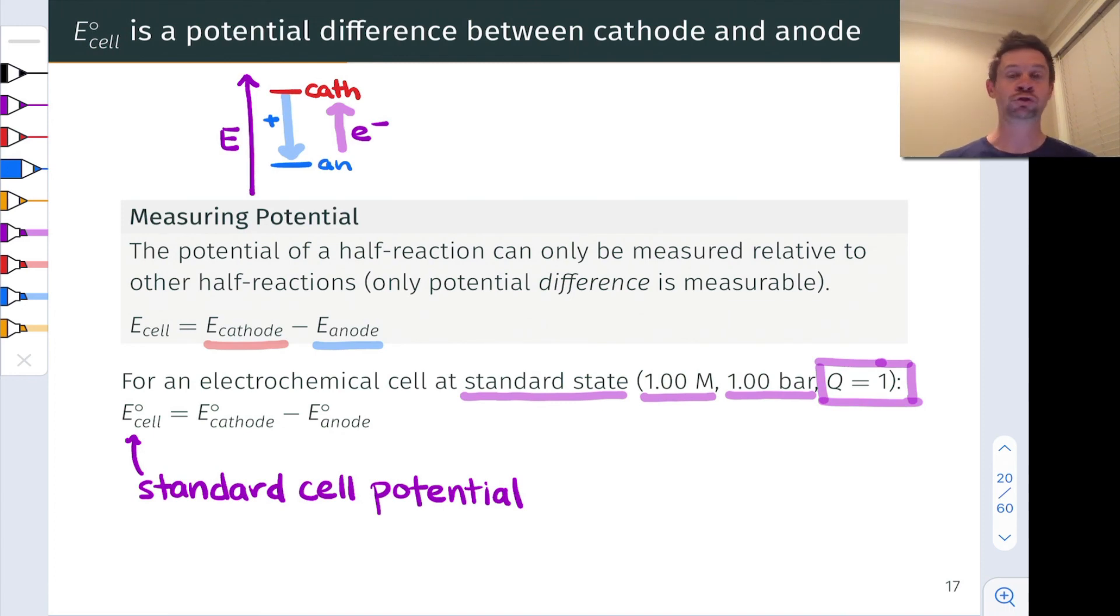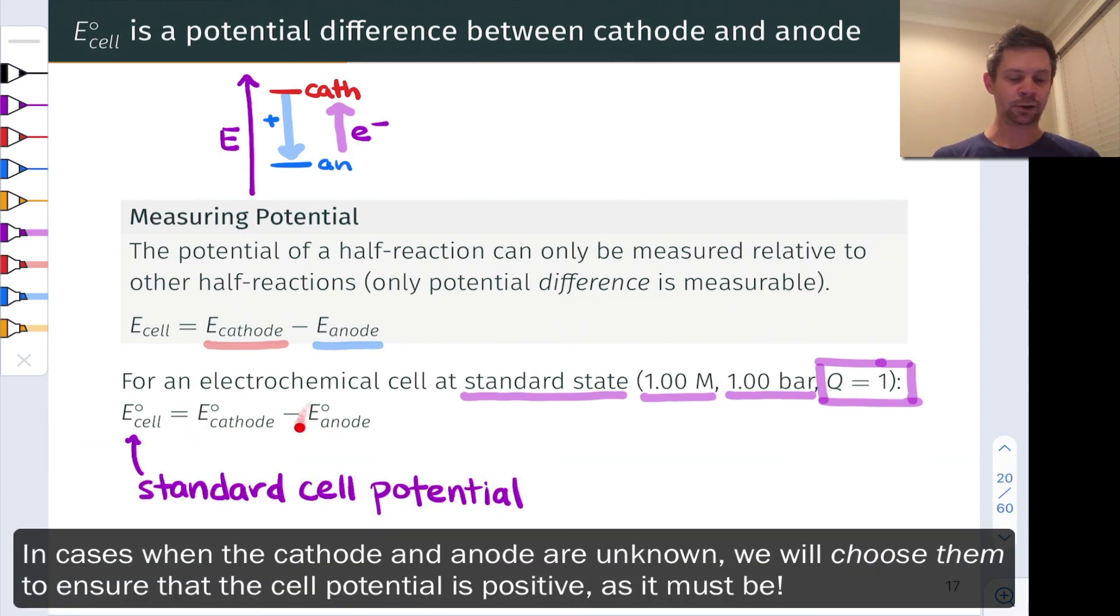When I hold a ball up here and drop it, it will fall spontaneously. Likewise charge will flow spontaneously from a half cell that is at high potential, the cathode, to a half cell at low potential, the anode. And how we measure and define these standard cathode and anode potentials ensures that this will always be the case, that E-cell will always come out to a positive value because the cathode's potential will always be greater or higher than the anode's potential.